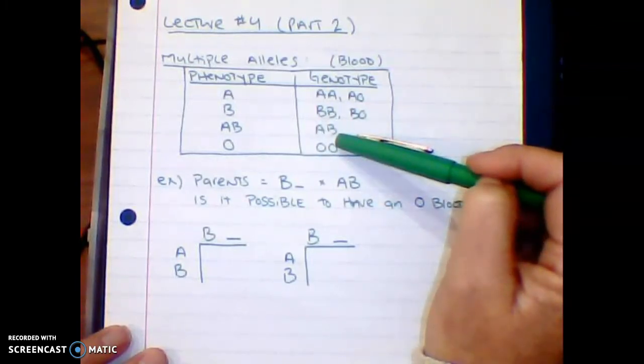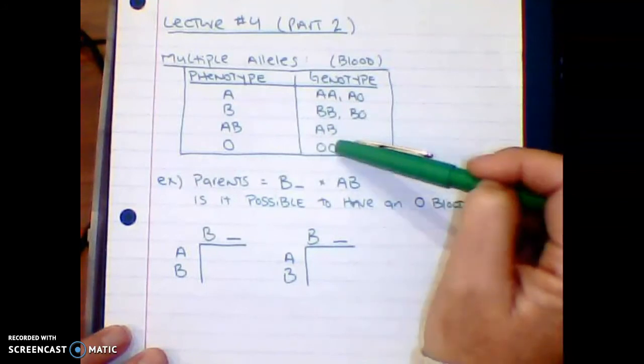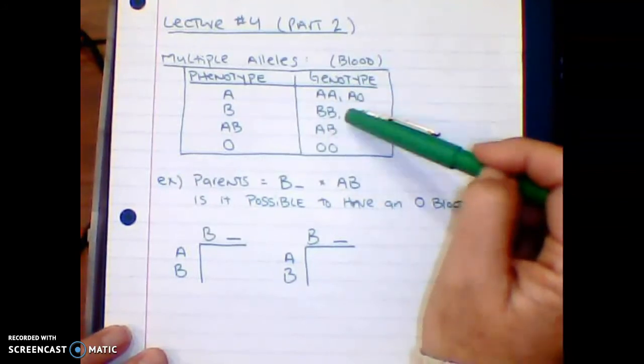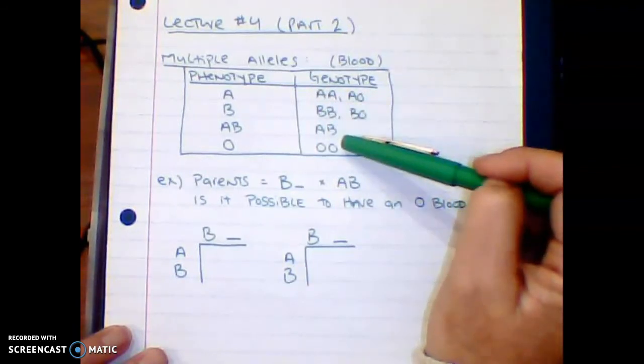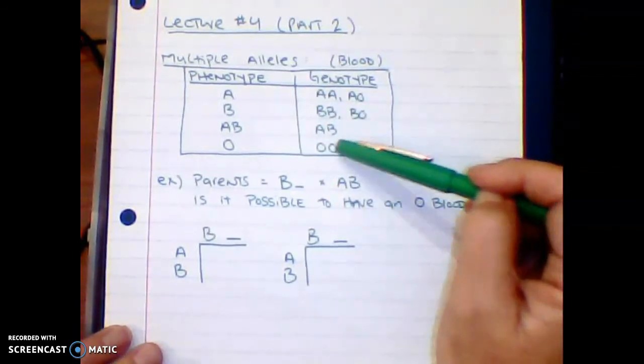O blood is pure recessive, which means it can only mix with itself. You cannot get A or B or AB as blood donors to an O blood person, so they can only take O blood.